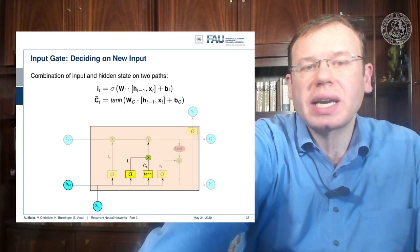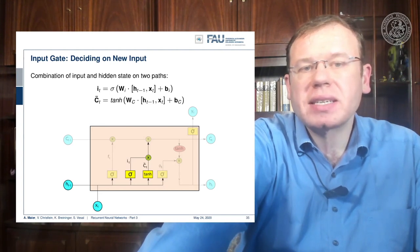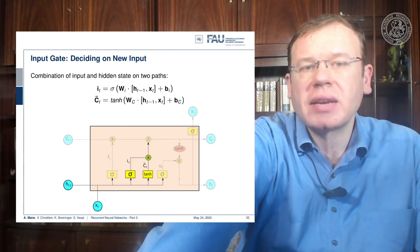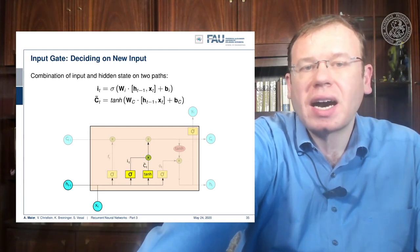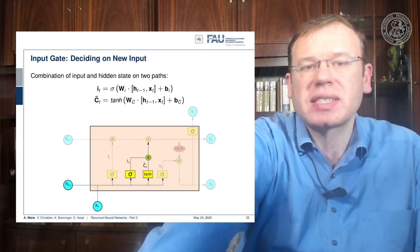So essentially we have this index that is then multiplied to the intermediate cell state C tilde. We could say that the tangent hyperbolicus is producing some new cell state, and then we select via IT which of these indices should be added to the current cell state.